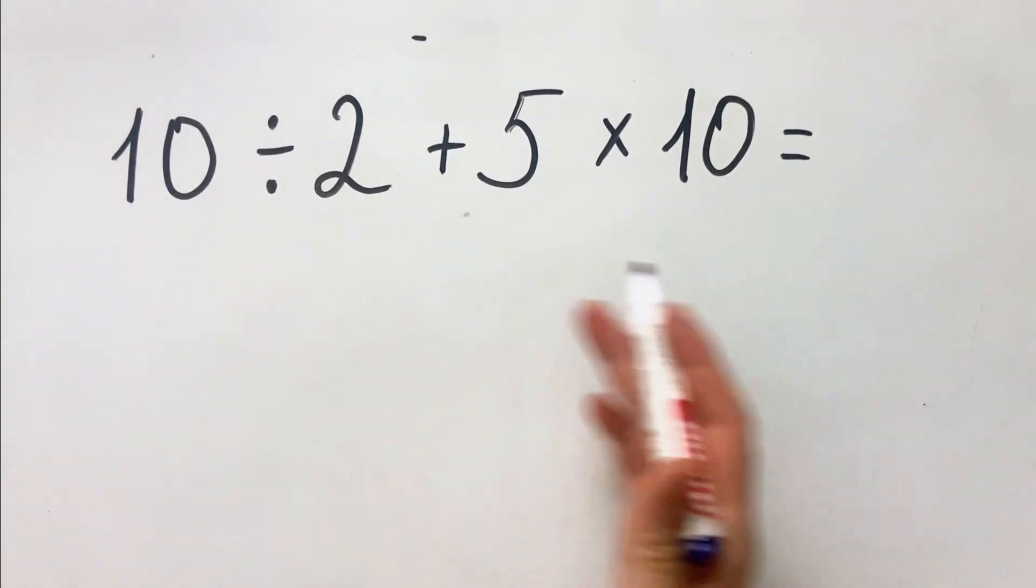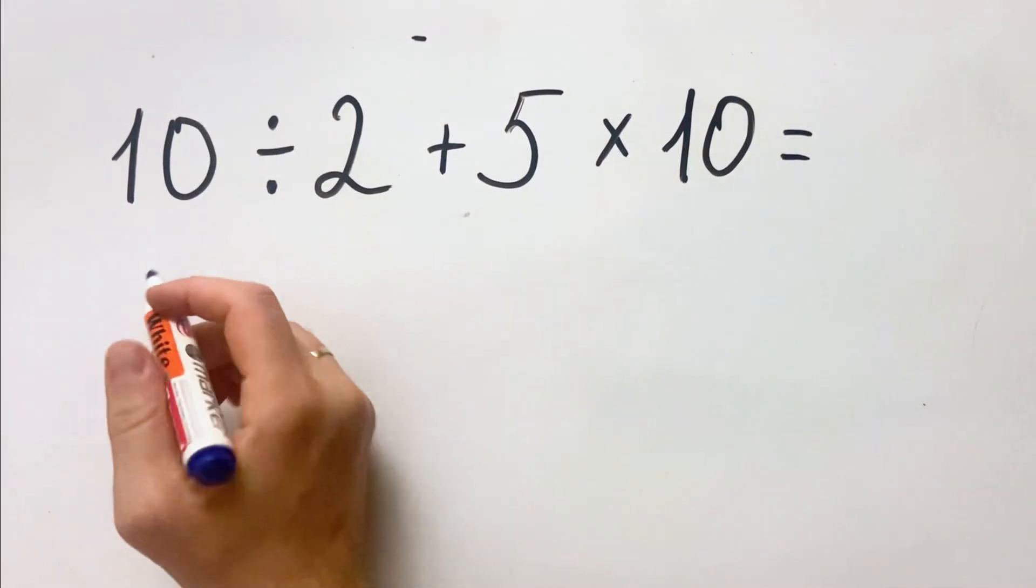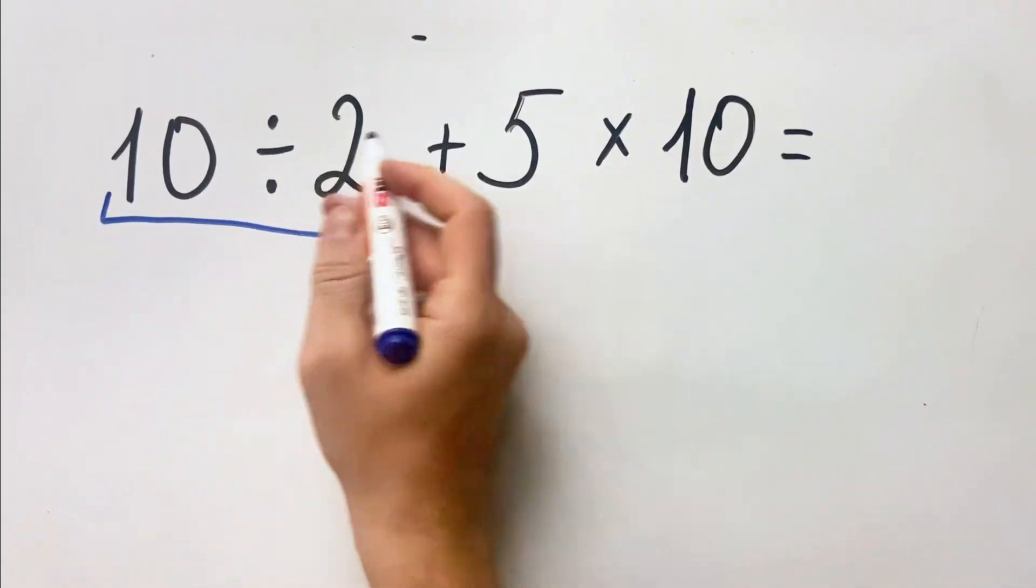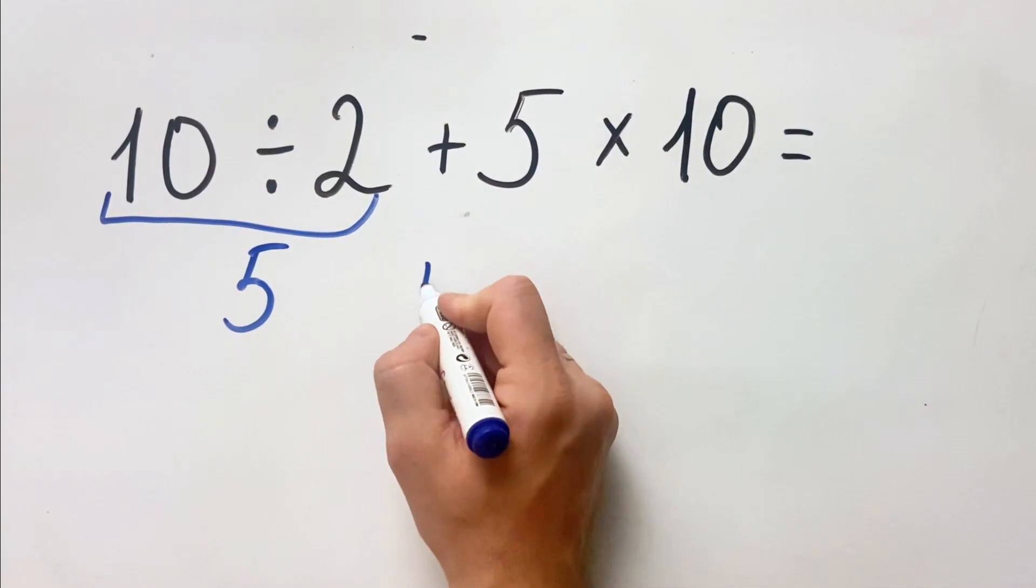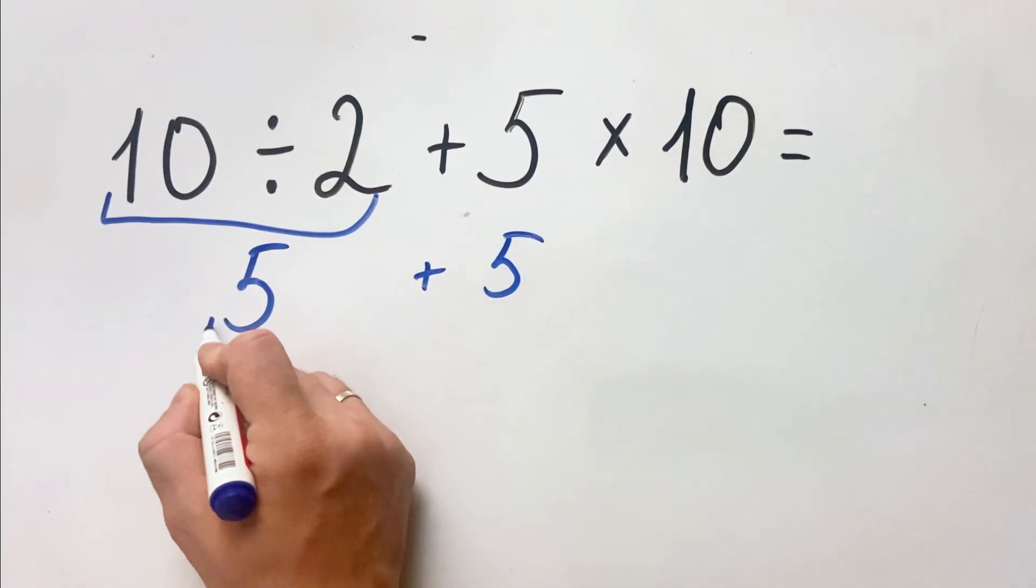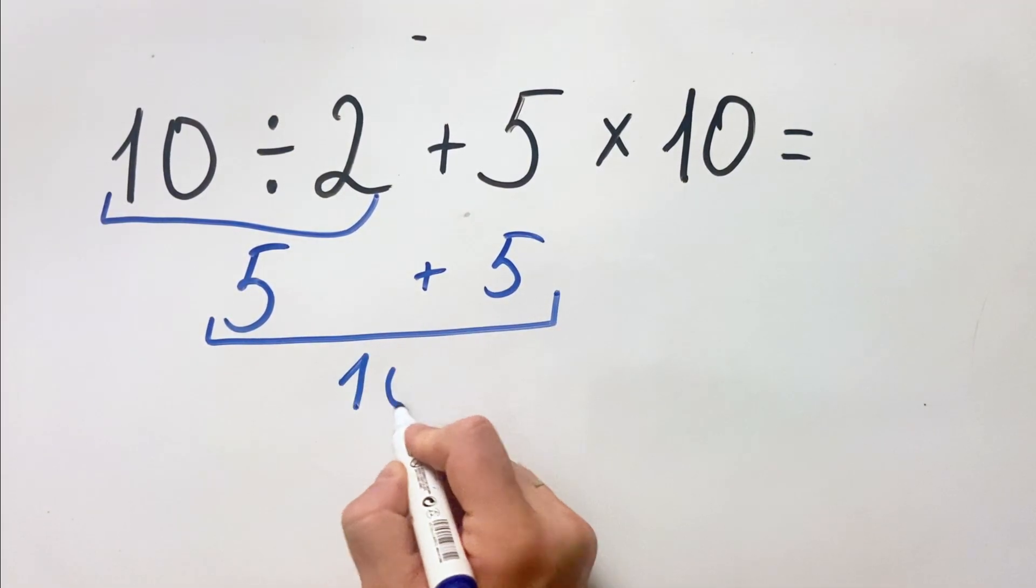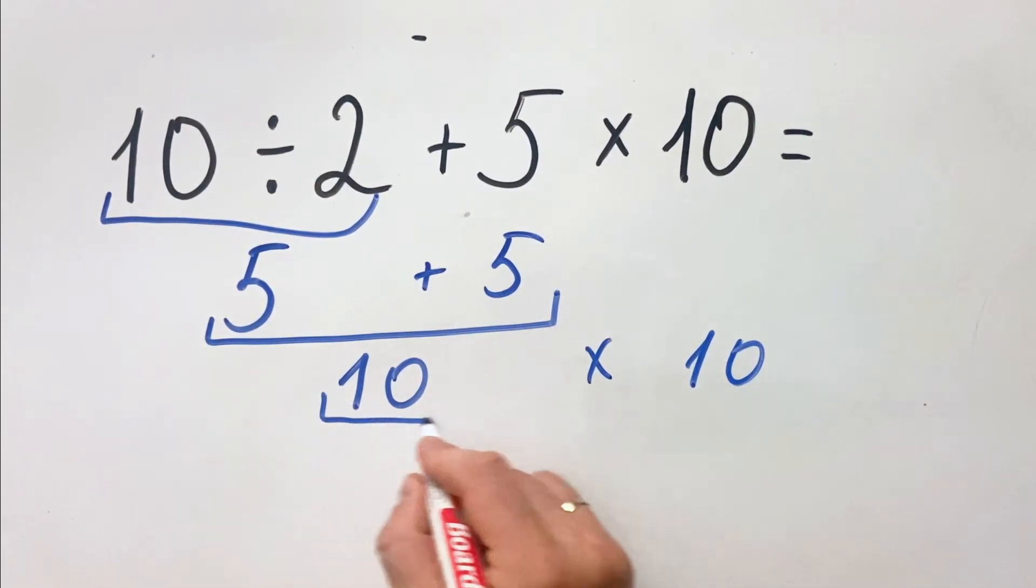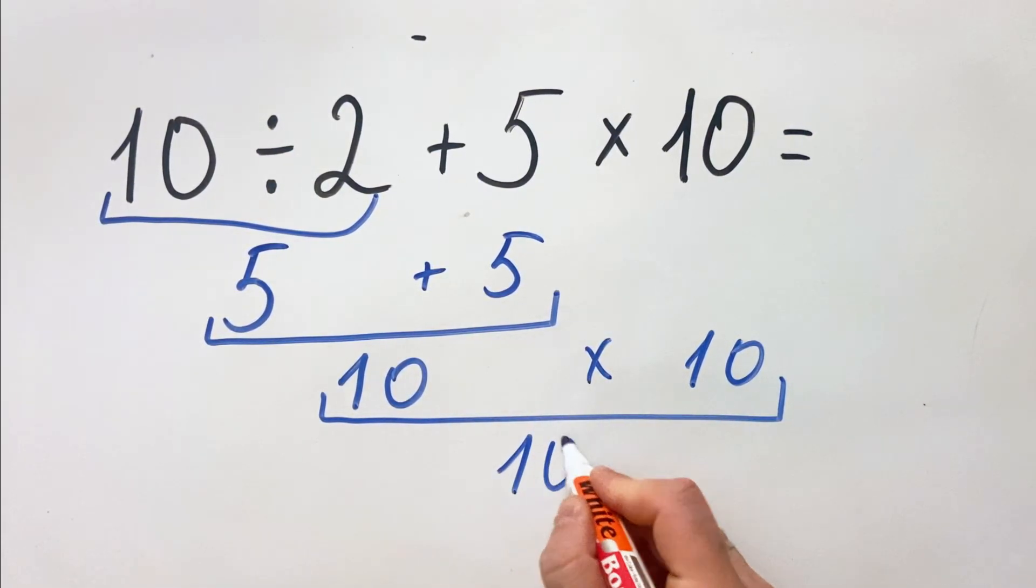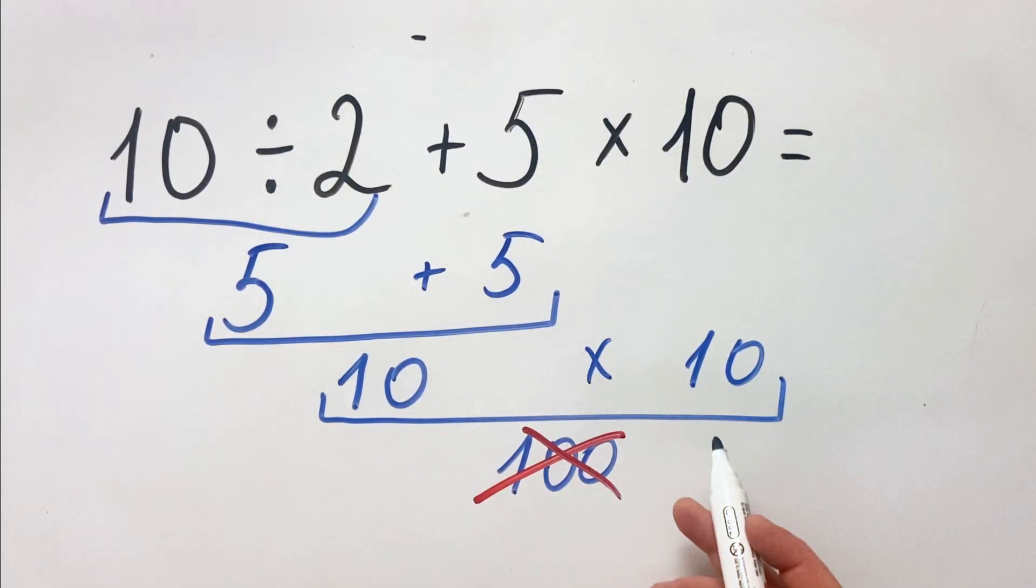So, what expression we have here. We have 10 divided by 2 is 5, 5 plus 5 is 10, and 10 multiplied by 10 equals 100. But this answer, of course, is not correct.